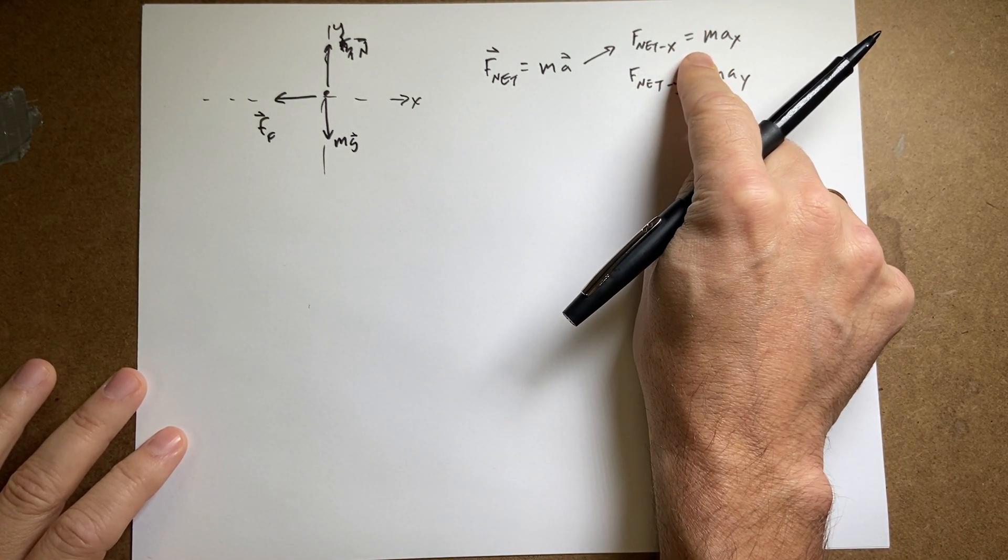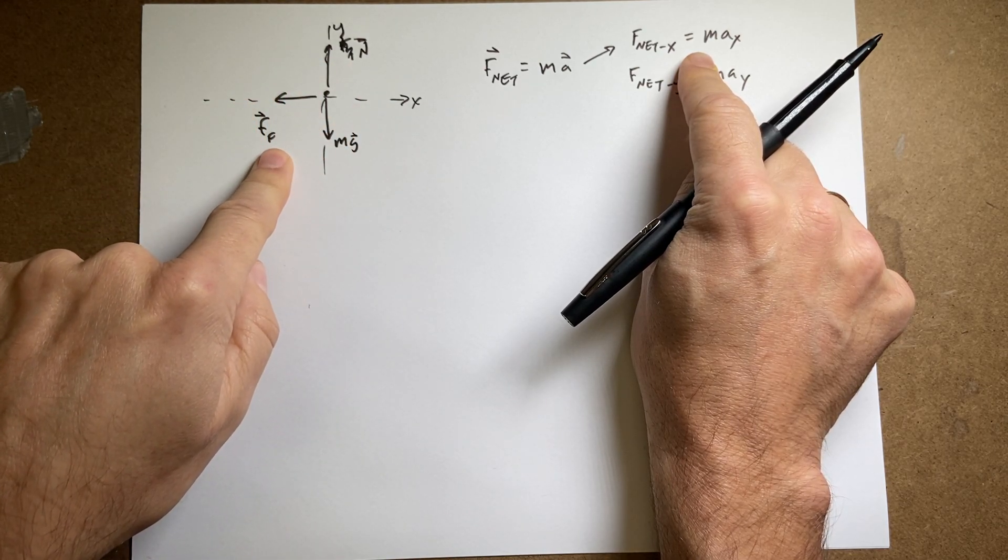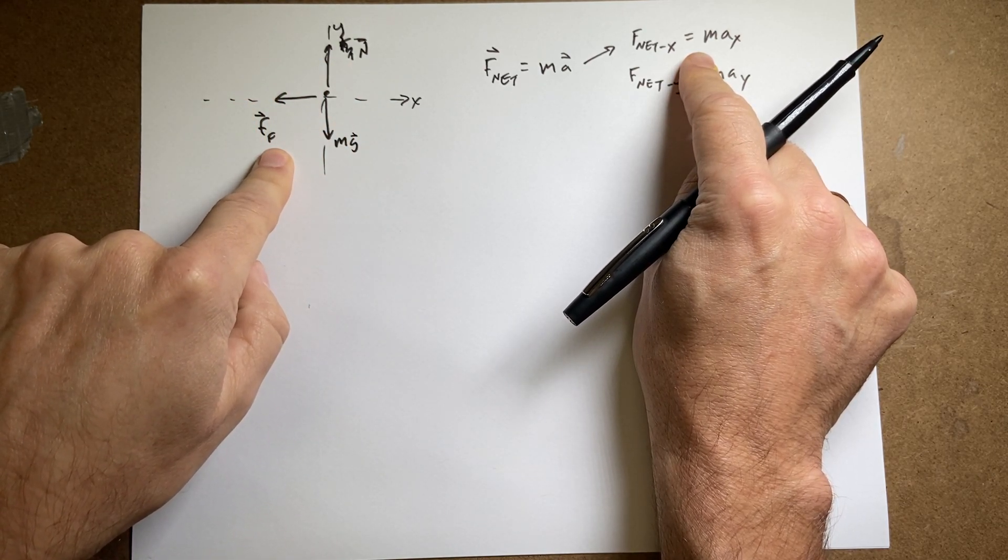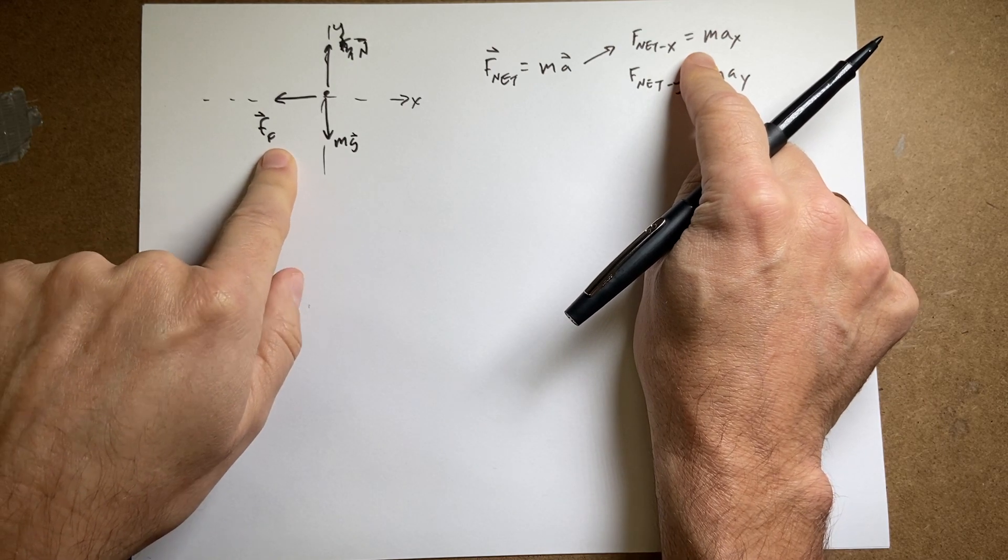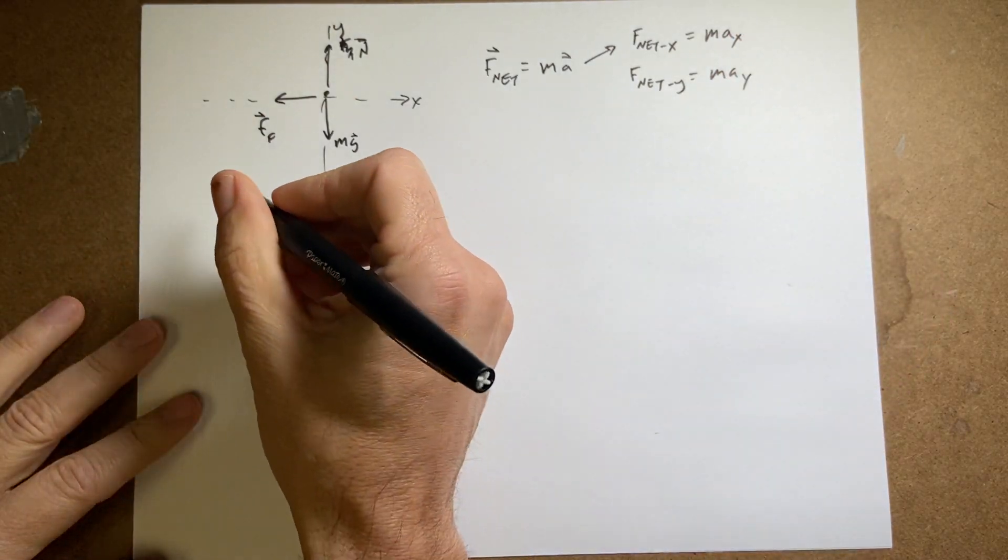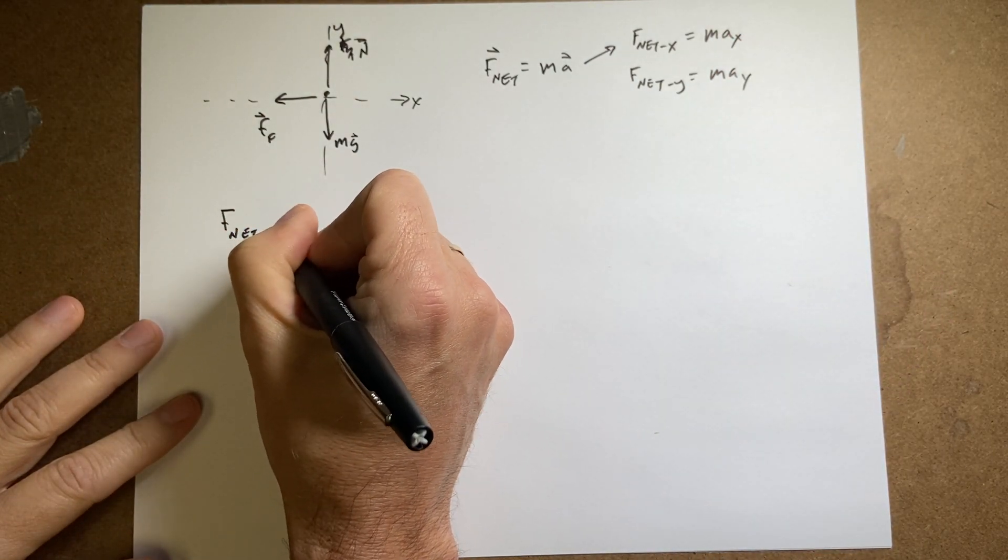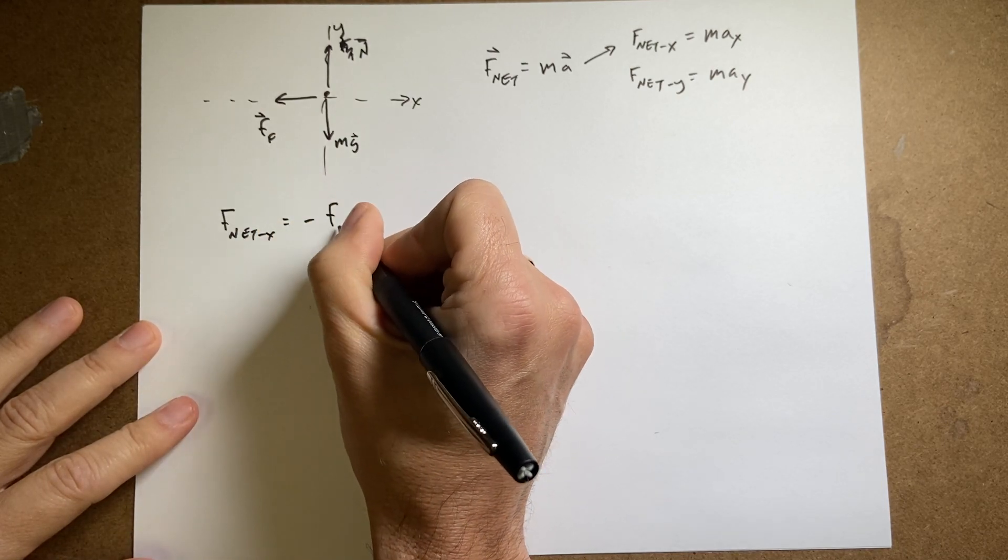Okay, what forces are acting in the x direction? Over here, I just have one. I have the friction force. Now, what's the component of this in the x direction? Well, the positive x direction is that way, but this is this way. So this is going to be f net x equals negative the friction force.